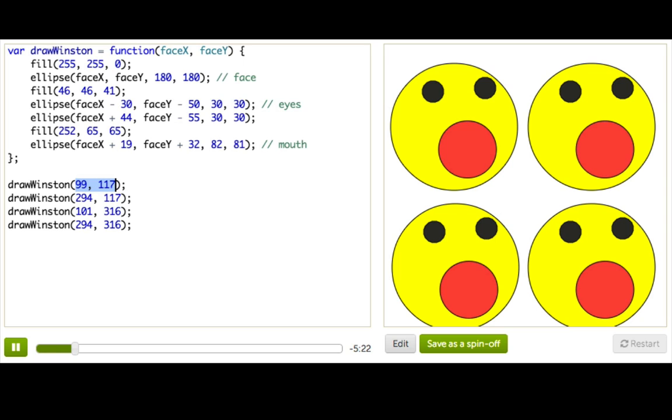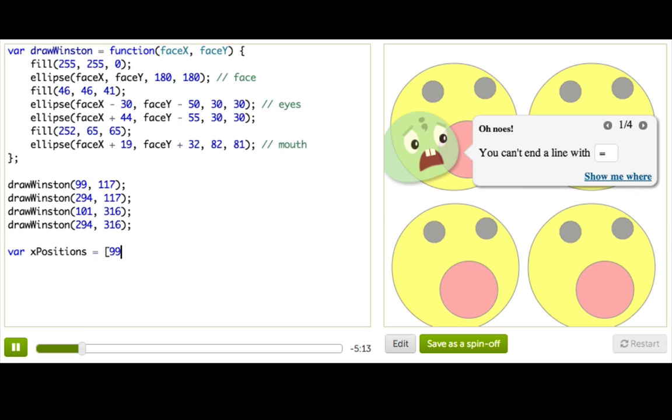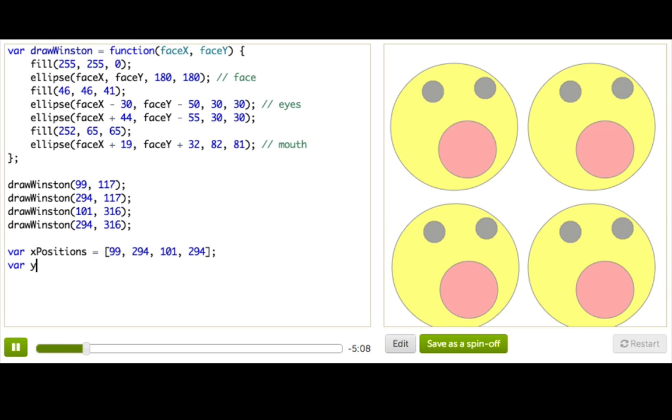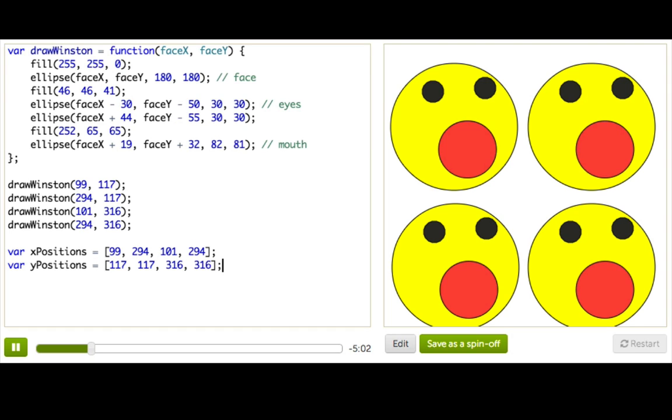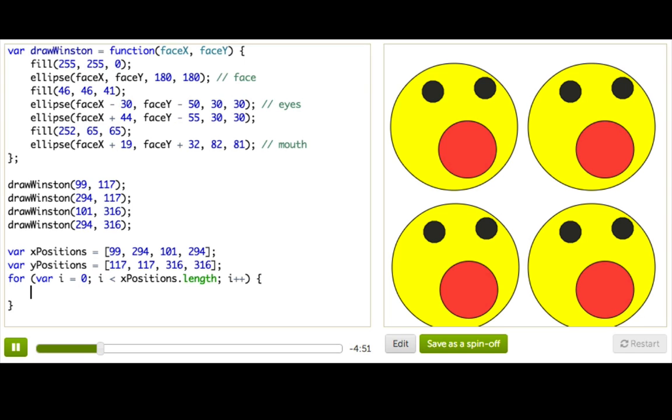We have two sets of values, so what we could do is have two arrays. One for x positions and one for y positions. So xPositions we might have 99, 294, 101, and 294. And yPositions we'll have 117, 117, 316, 316. Now we can loop through those with our for loop: for i equals zero, i is less than xPositions.length, i plus plus. So we're going through each element in xPositions.